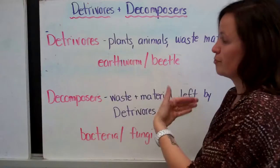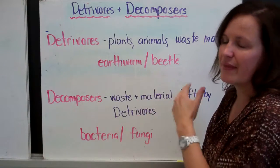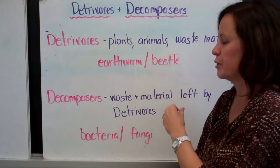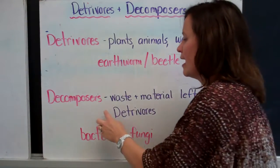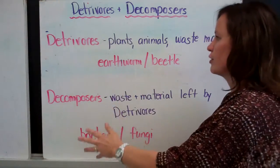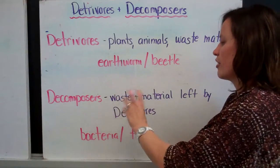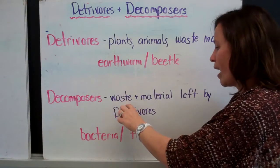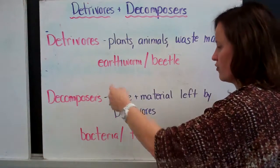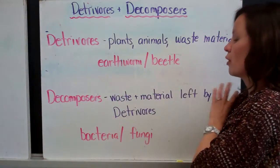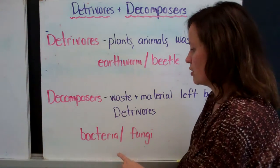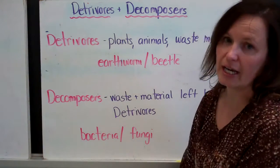The detritivores produce waste and don't consume everything — they leave a little bit of material behind. That's where the decomposers come in. Decomposers get their energy from the waste of the detritivores and the material left behind by them. An example of a decomposer is bacteria or fungi.